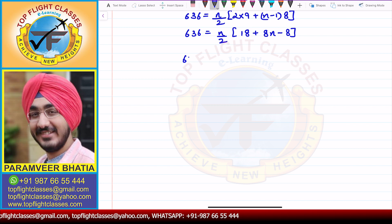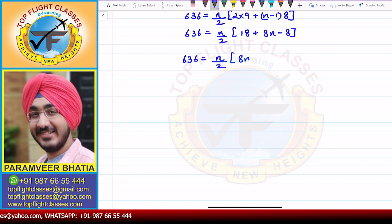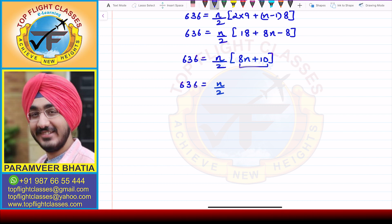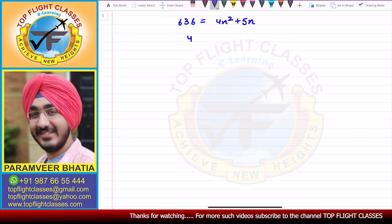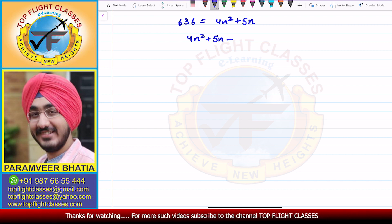Simplifying, 636 = N/2 times (8N + 10). Taking 2 common, 636 = N/2 times 2(4N + 5), so the 2s cancel giving 636 = 4N² + 5N. Rearranging: 4N² + 5N minus 636 = 0.